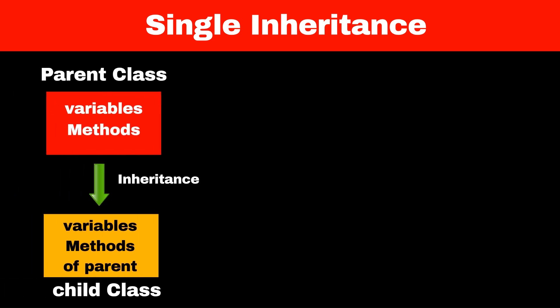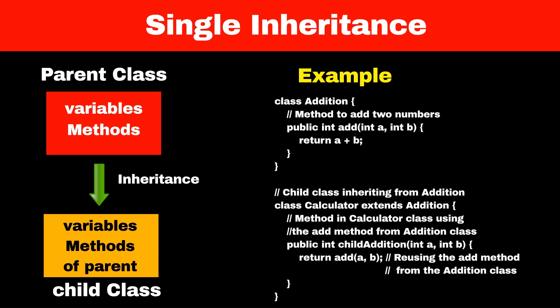Now let's understand the types of inheritance. There are a total of 5 types of inheritance. The first type is single inheritance, where one parent class can have only one child class, and the child class can access variables and methods of the parent class. To implement this type we use the extends keyword followed by the name of the parent class. The example we saw earlier about the addition and calculator class is an example of single inheritance.